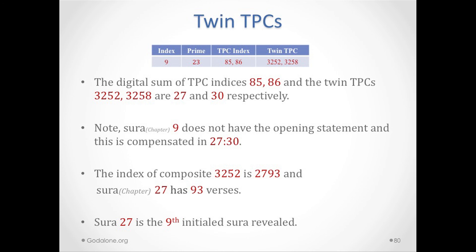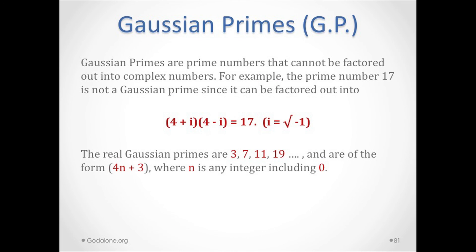Chapter 27 is the 9th initial Surah that was revealed. Now, Gaussian primes — let's see how this generates chapter 9 having 127 verses.